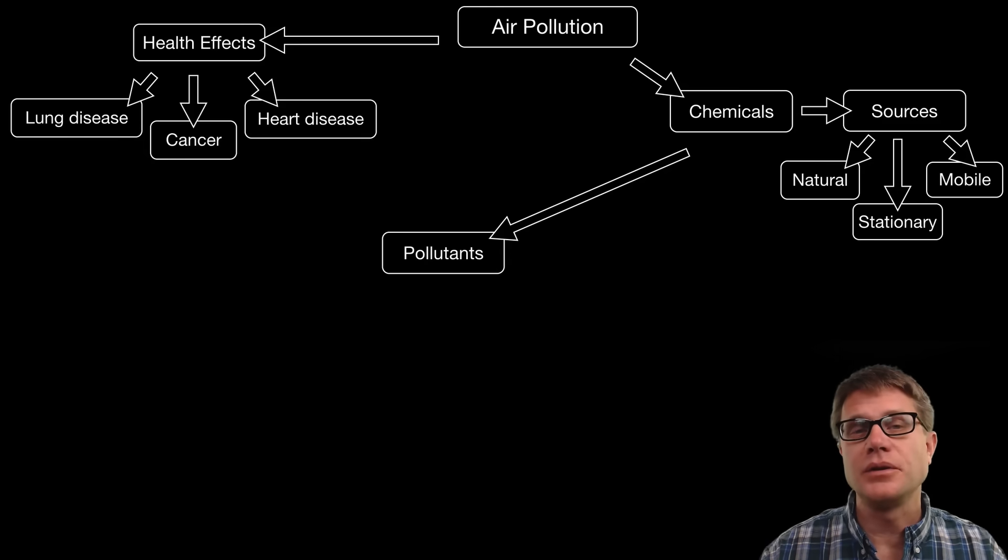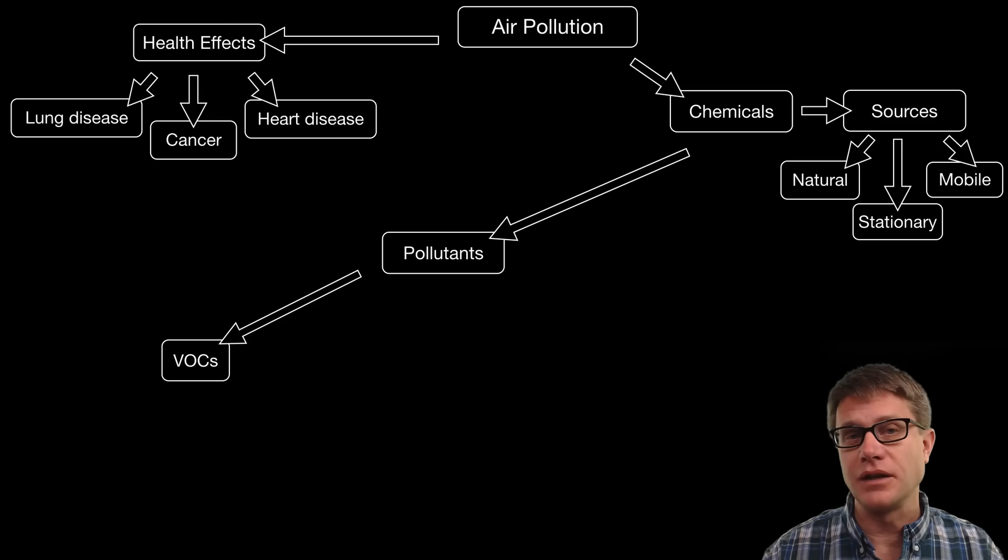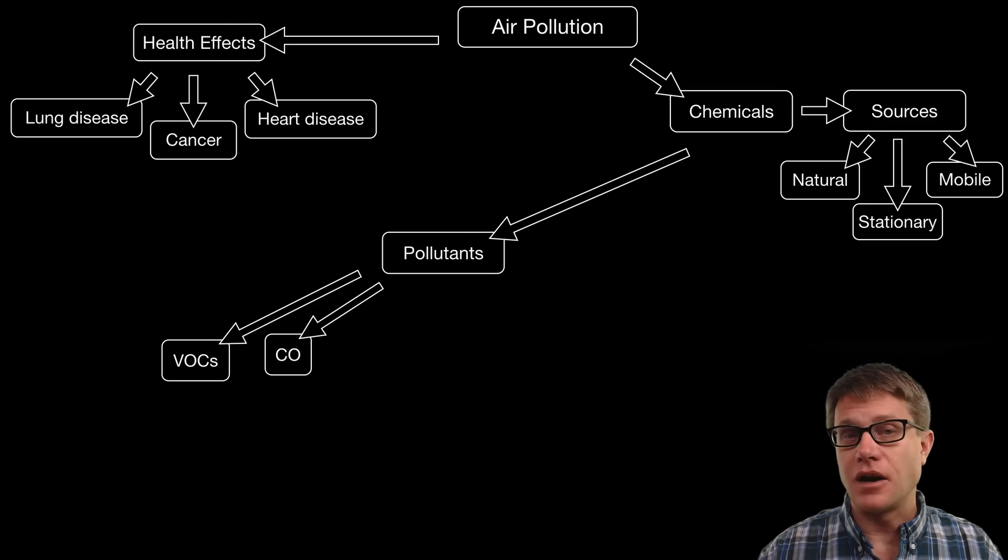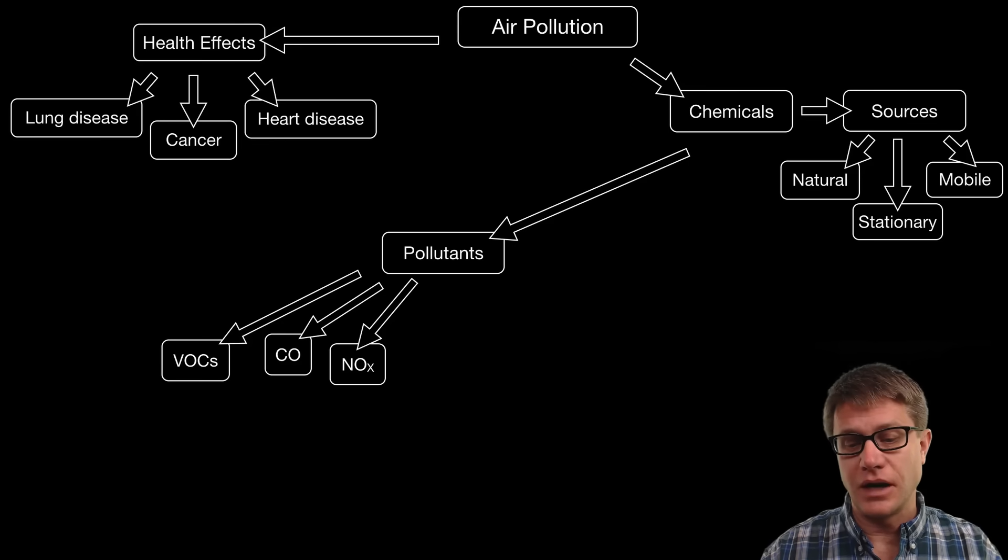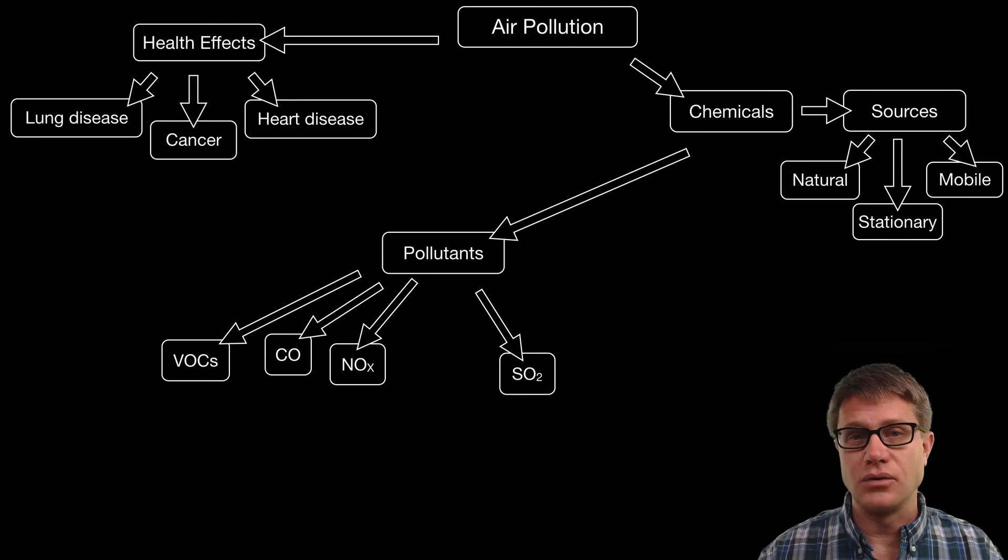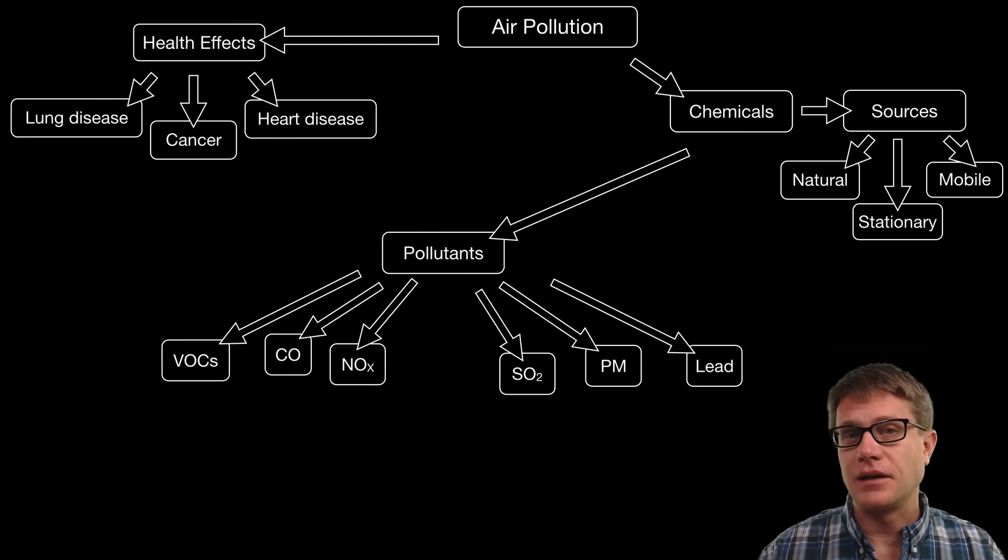And in AP Environmental Science you simply should memorize the different types of pollutants that I have listed here. Starting with volatile organic compounds or VOCs. This would be like formaldehyde, gasoline, anything that is organic and can diffuse into the environment. We have carbon monoxide, this odorless gas. We have NOx which is going to be both nitric oxide and nitrogen dioxide. We then have sulfur dioxide produced through the combustion of coal. We then have particulate matter. These are suspended solids. And then finally we have chemicals like lead.